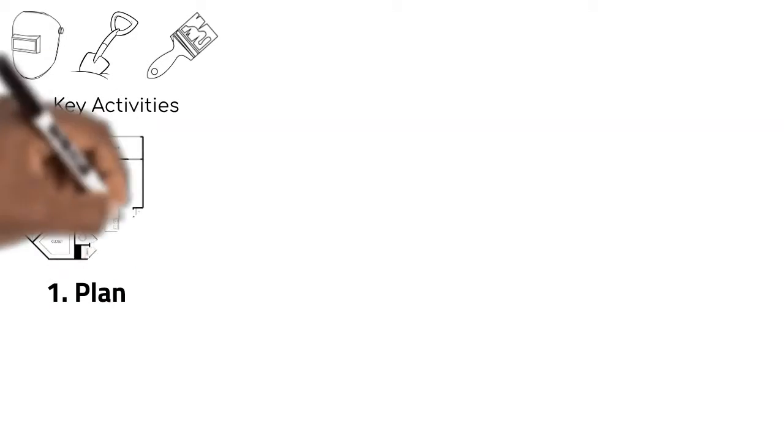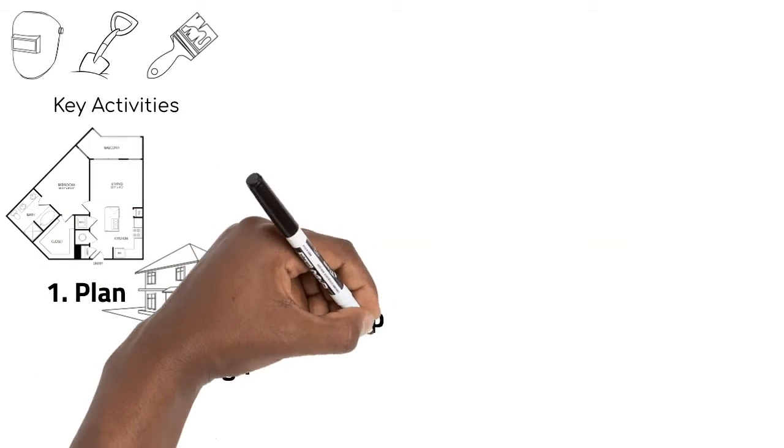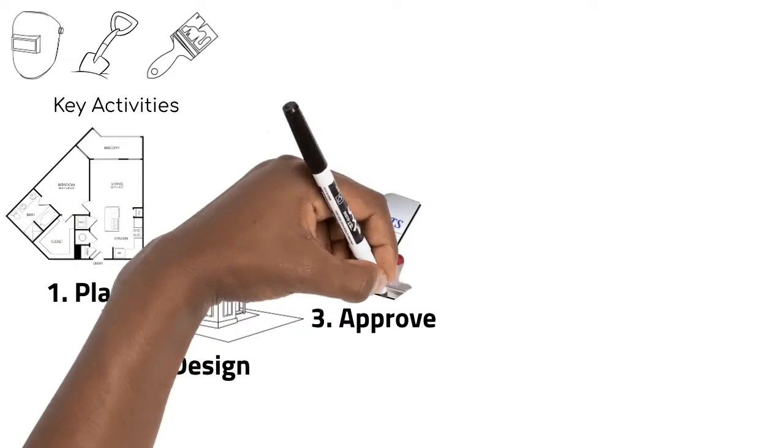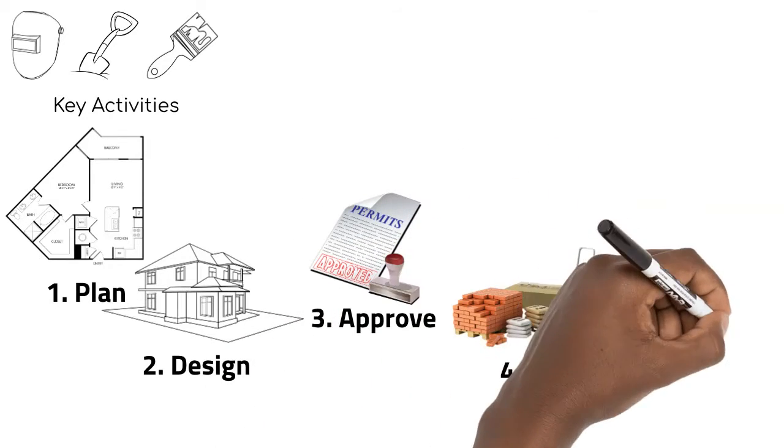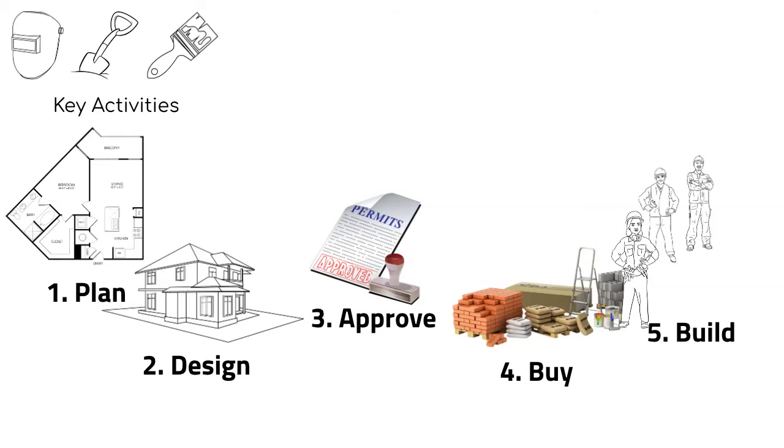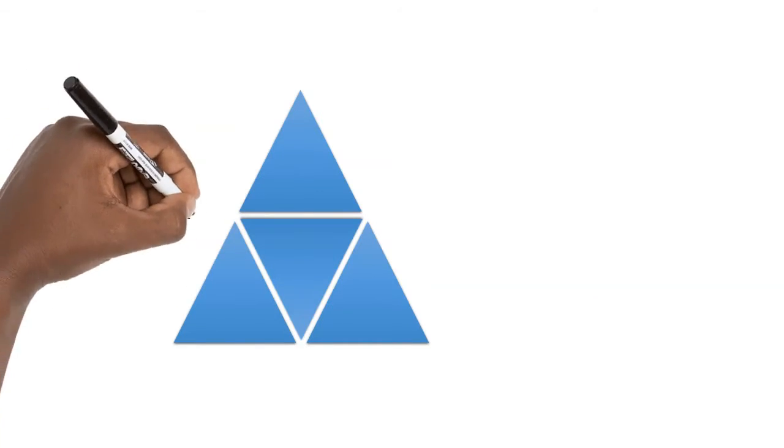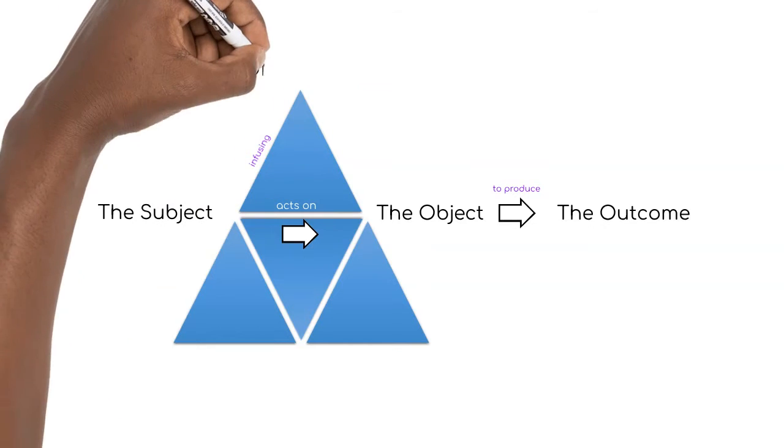The final aspect of the chat framework—the bottom right triangle—is where we focus next. Here we list the key activities you need to perform to produce the value stated in the outcome. This is really a division of labor, usually broken up into the types of people you've listed under the subject. And there you have it—pulling it all together, that's the chat, your business through an activity theory framework lens.